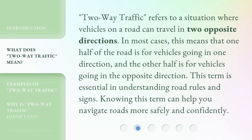Two-Way Traffic refers to a situation where vehicles on a road can travel in two opposite directions. In most cases, this means that one half of the road is for vehicles going in one direction, and the other half is for vehicles going in the opposite direction. This term is essential in understanding road rules and signs. Knowing this term can help you navigate roads more safely and confidently.